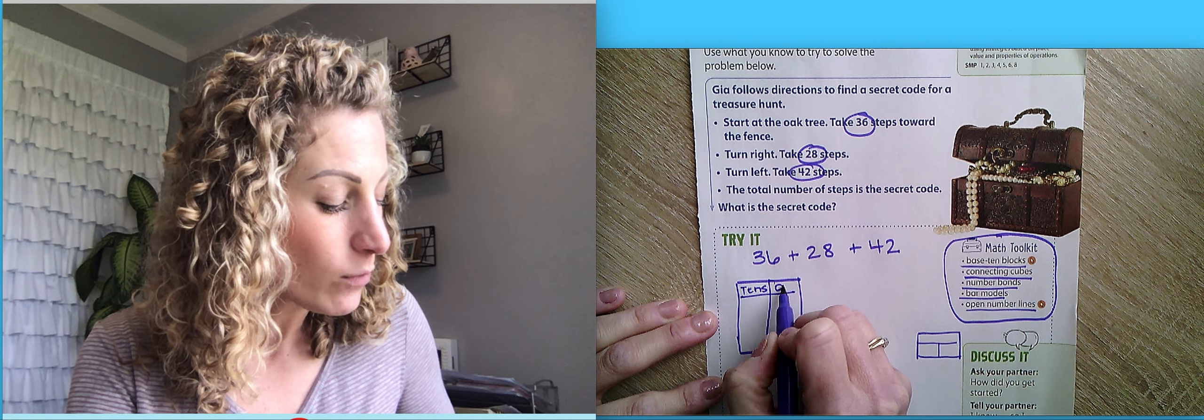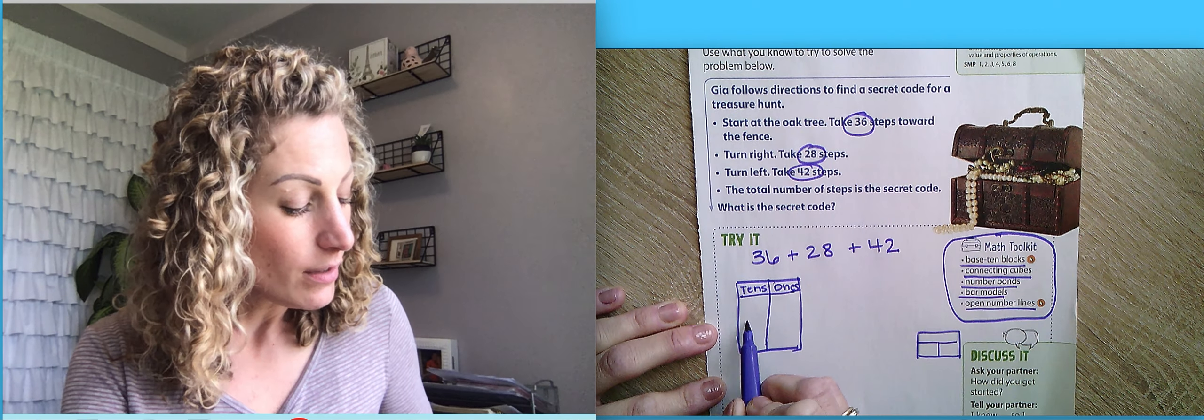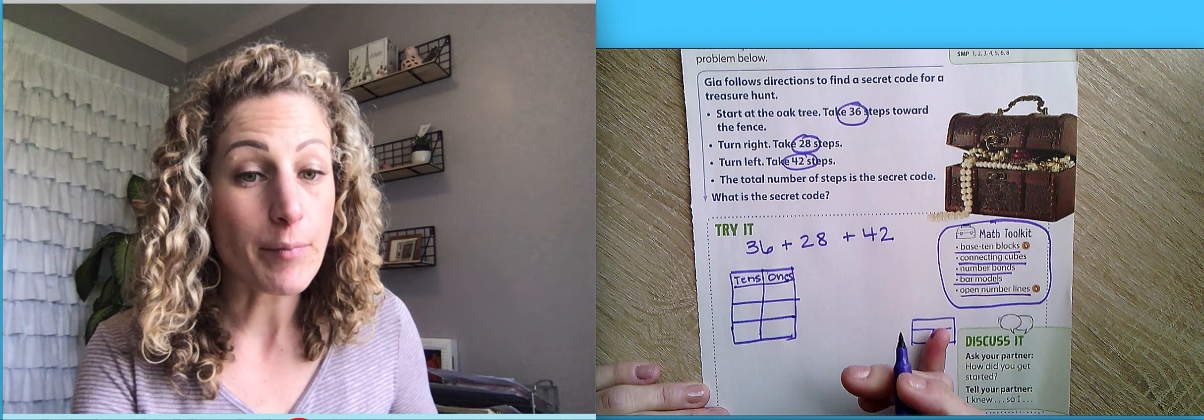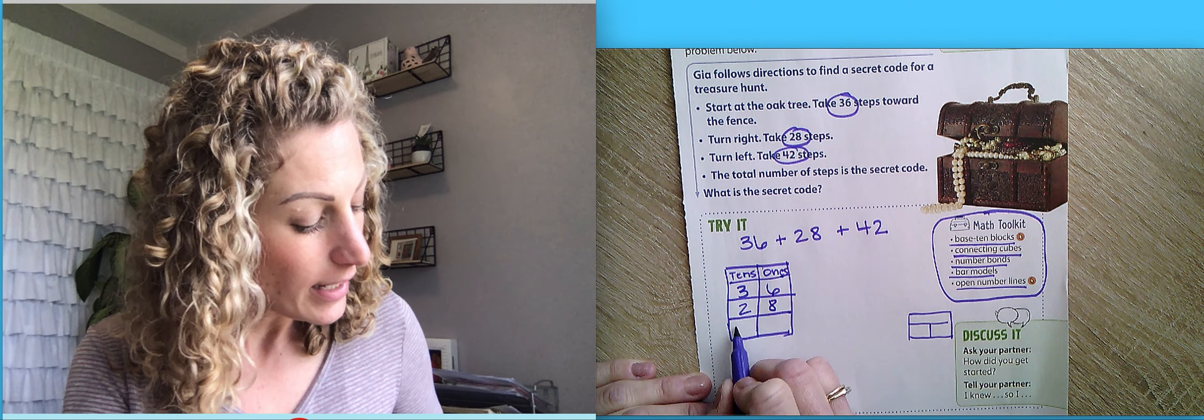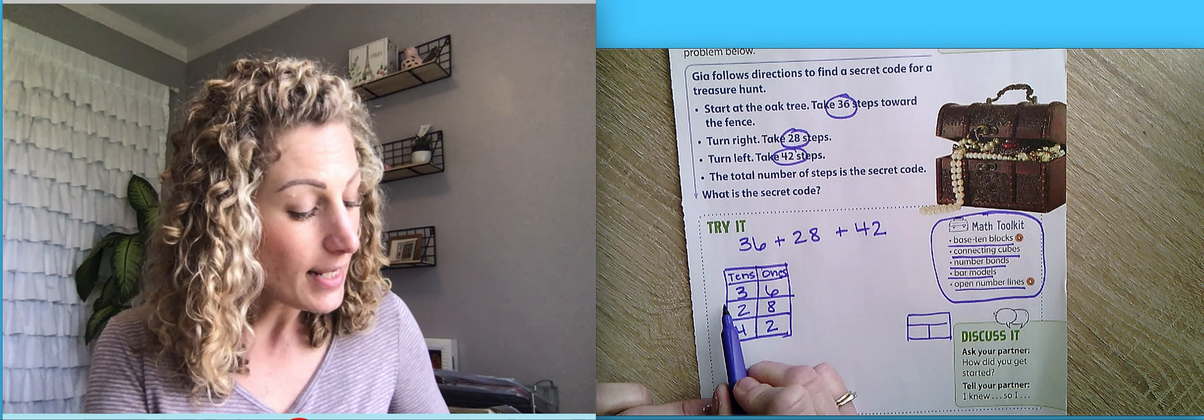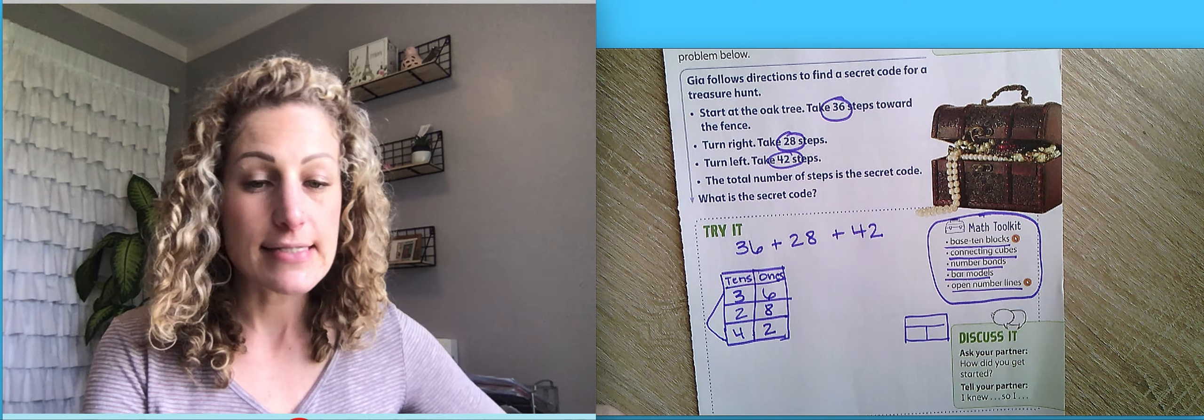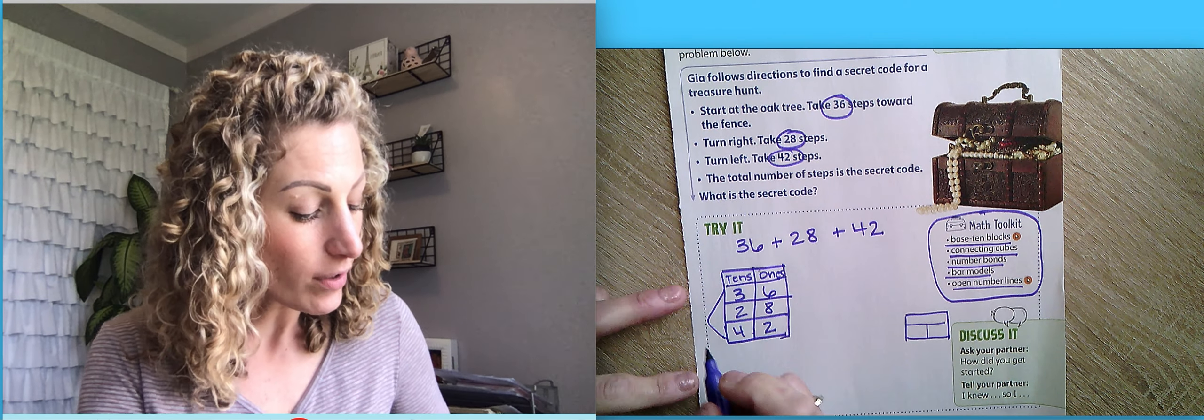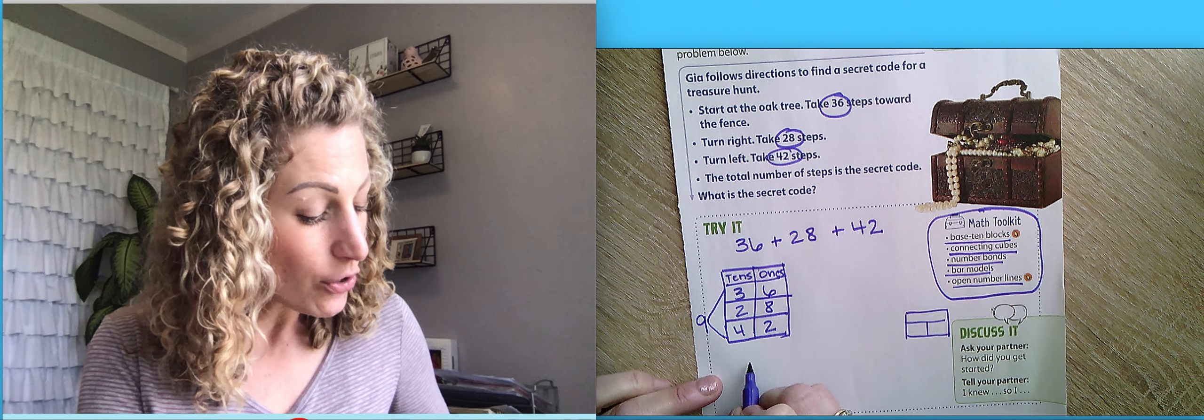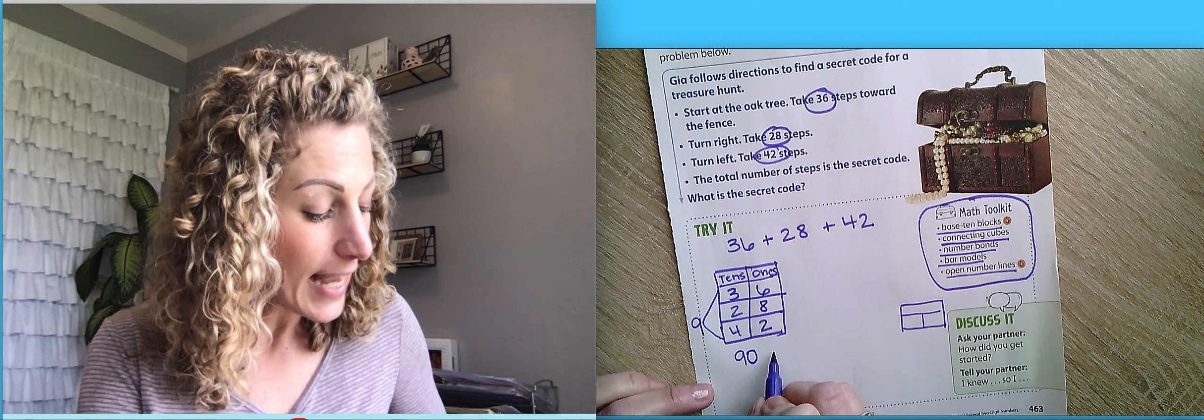We have tens and ones. And we have three numbers: 36, 28, and 42. One way I can do this is add all of my tens together. 3 and 2 is 5. 5 and 4 is 9. So this number would be 90.